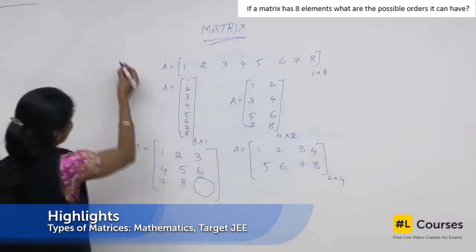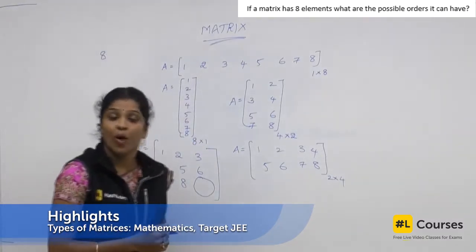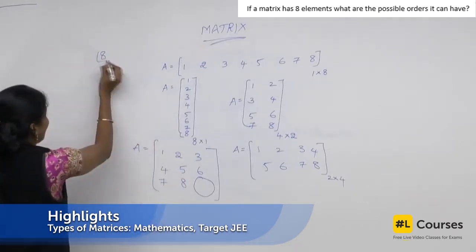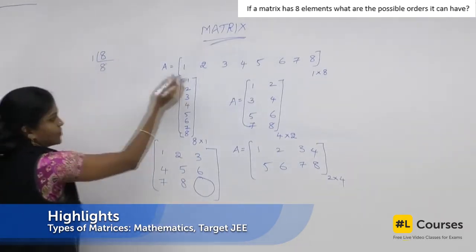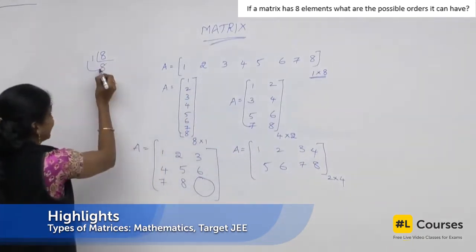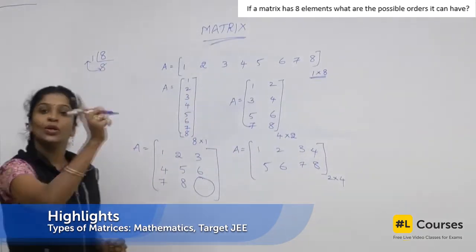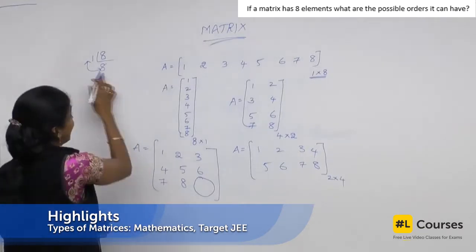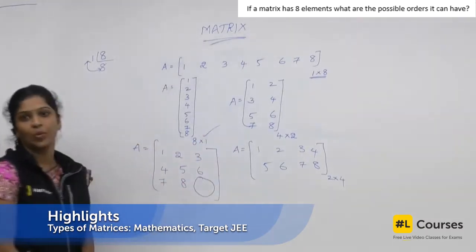Look at here. How many elements I gave? 8. So, start with 1. How many times it will be divisible with 1? 8 times. So, here is your order. 1 by 8. And the ultra of it. What is the ultra of it? 8 by 1. Here is the second one.